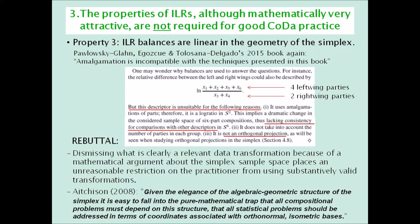In fact, John Aitchison himself warned against this, saying, and I quote: 'Given the elegance of the algebraic-geometric structure of the simplex, it is easy to fall into the pure mathematical trap that all compositional problems must depend on the structure — that all statistical problems should be addressed in terms of coordinates associated with orthonormal isometric bases.'